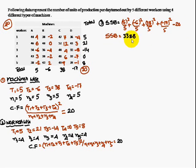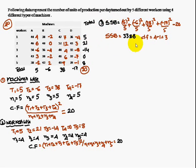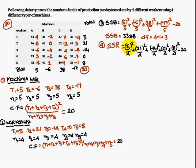Therefore SSB = 338.8. The degree of freedom for machines is the number of machines minus one: 4 minus 1 = 3.